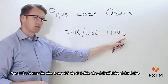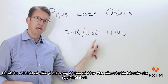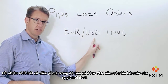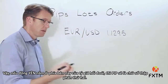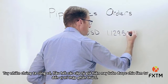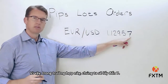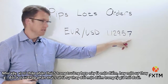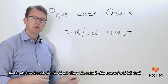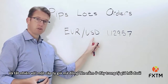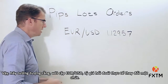The exception to the pip being the fourth decimal place is anything where you have the yen on the right side of the exchange rate. If the yen is the quote currency, the pip will be the second decimal place. However, most currency pairs these days are quoted all the way out to the fifth decimal place, so a change in the fifth decimal place would be a change of one point. With a yen pair, that point would be at the third decimal place.